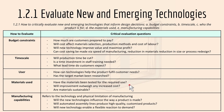For materials used: have the materials been tested for the required use, which links to research and development? Will improvement outweigh any increased costs? And are the materials sustainable or recyclable? The last area is manufacturing capabilities, which refers to the technology and physical limitations of manufacturing. The three questions are: will new technology influence the way production is made? Will automated assembly lines produce high quality and customized products? And will new technology enable a flexible reaction to demand?